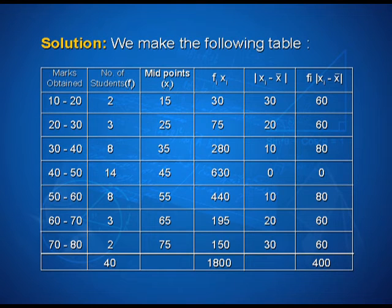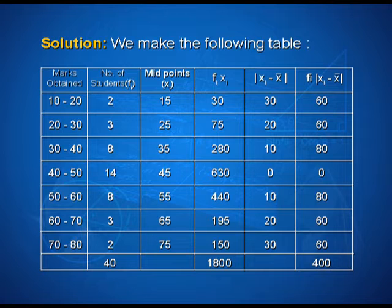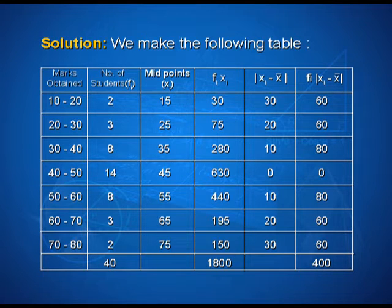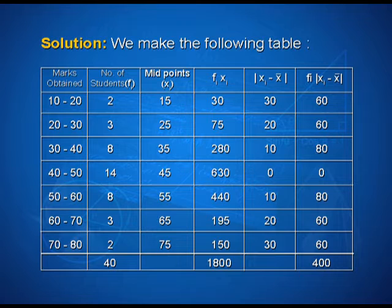Now we make the following table. The first column shows the marks obtained. The second shows the number of students, that is, frequencies. The third column is midpoints, that is x_i. The fourth column is for the product of f_i and x_i. The fifth column is for the absolute value of x_i minus x-bar. And the sixth column is for the product of f_i and the absolute value of x_i minus x-bar.